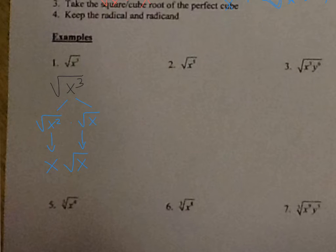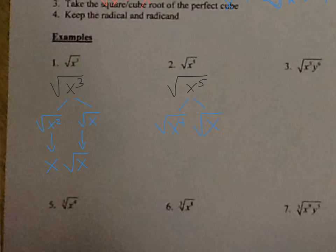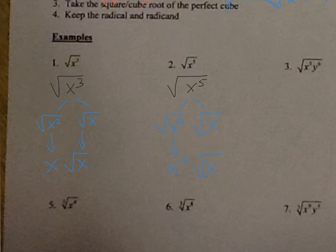Number two: the square root of x to the fifth. What's the largest perfect square that goes into x to the fifth? Since this is an odd exponent, you just go down one to the nearest even — that's x to the fourth times x. When simplifying square roots with odd exponents, the leftover is always x. The square root of x to the fourth is x squared, and then bring down the square root of x.